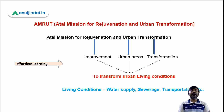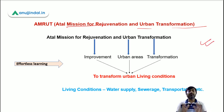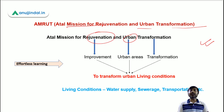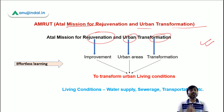Let's talk about the Atal Mission for Rejuvenation and Urban Transformation, that is the AMRUT scheme. If we talk about the objective of the scheme, the objective is very clear. Because there are three words in this scheme: one is Rejuvenation, one is Urban, and another is Transformation. You have to focus on these three words only, and then your scheme will easily be clear.